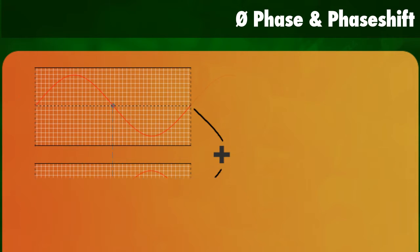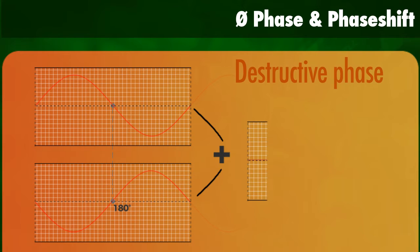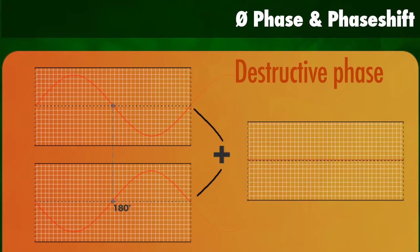When we add two identical waves of the same frequency and the same amplitude together at 180 degrees, we get a destructive interference. You can see we have a complete cancellation and a zero amplitude, so we actually have no sound.